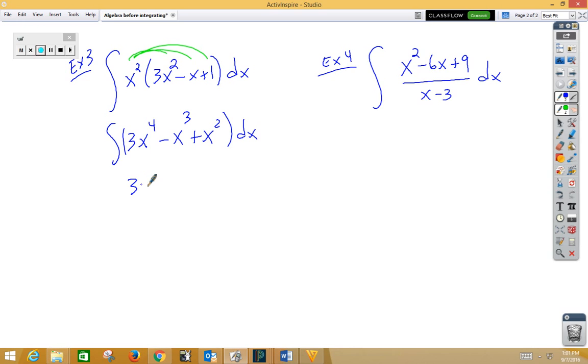Term by term that would be 3x to the fifth divided by 5 minus x to the fourth divided by 4 plus x cubed divided by 3 plus c.